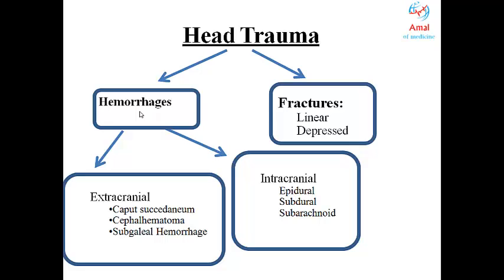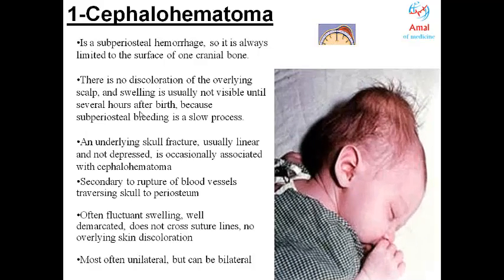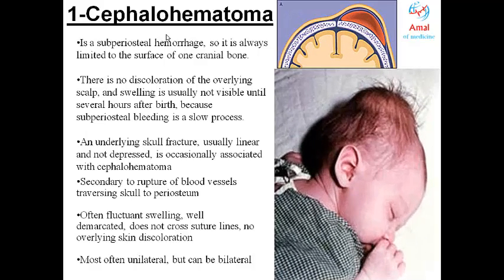In this presentation, we'll highlight the types of hemorrhages that can occur during childbirth. We'll start with cephalohematoma — a condition where bleeding occurs between the skull and the periosteum. Because the bleeding is between the skull and periosteum, it is called subperiosteal bleeding, occurring above the periosteum.